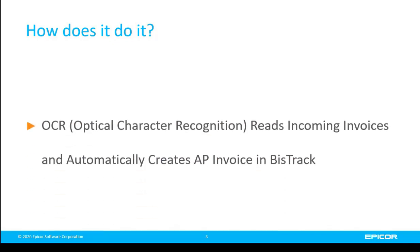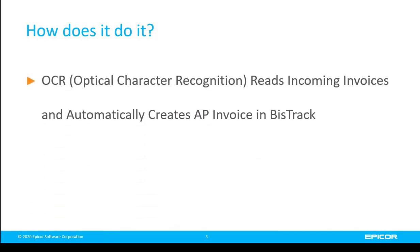So how does AP Automation accomplish this? It uses something called OCR — optical character recognition. This is a term used to describe software that can convert printed characters into digital text. AP Automation uses this technology to read the incoming invoices so it can pass the information along to BizTrack to create supplier invoices.